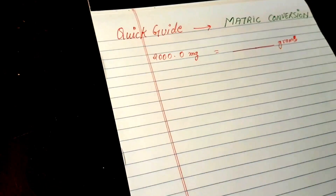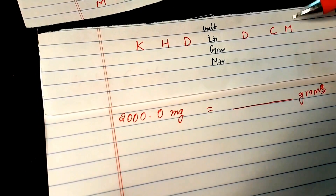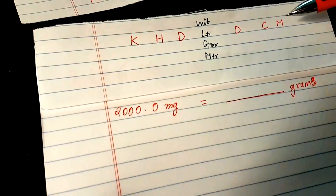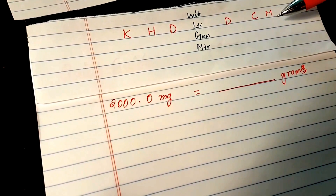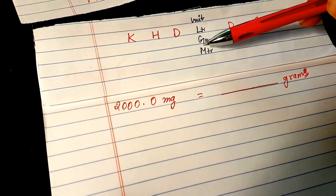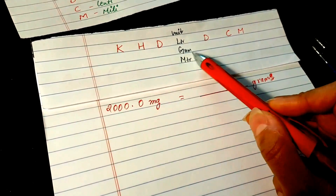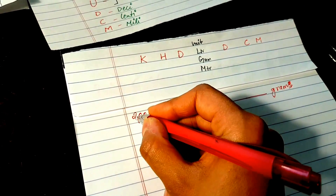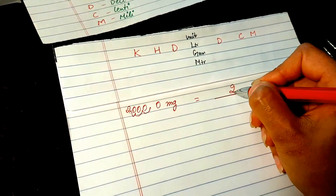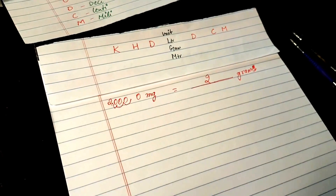On the conversion table, milligrams is right here and grams is right here. Grams is three places to the left of milligrams, so we move the decimal three places to the left. That gives us 2.000, which means 2000 milligrams equals 2 grams. If you don't understand, pause the video and look at the table again.